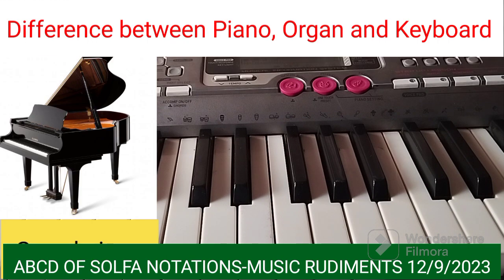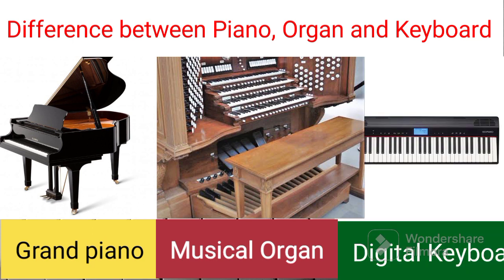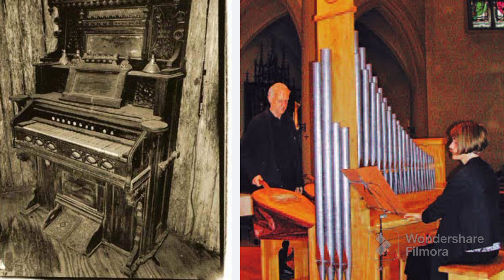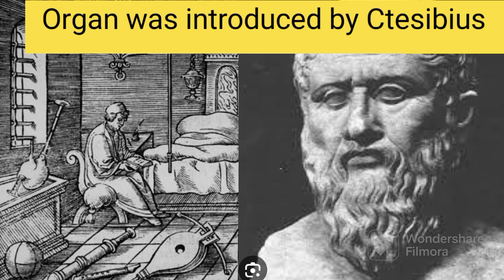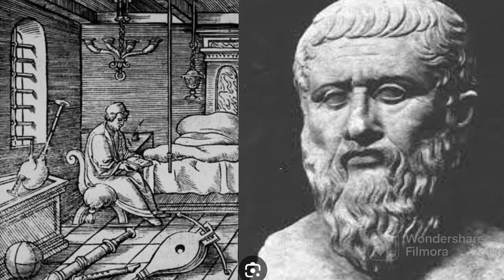What is the difference between piano, organ, and keyboard? Organ was seen to be the oldest because it was introduced as far back as the 3rd century BC, before Christ. It was introduced by a man called Thesibius, a Greek living in Alexandria, Egypt. They were constructed mainly with pipes, and keys were later introduced.